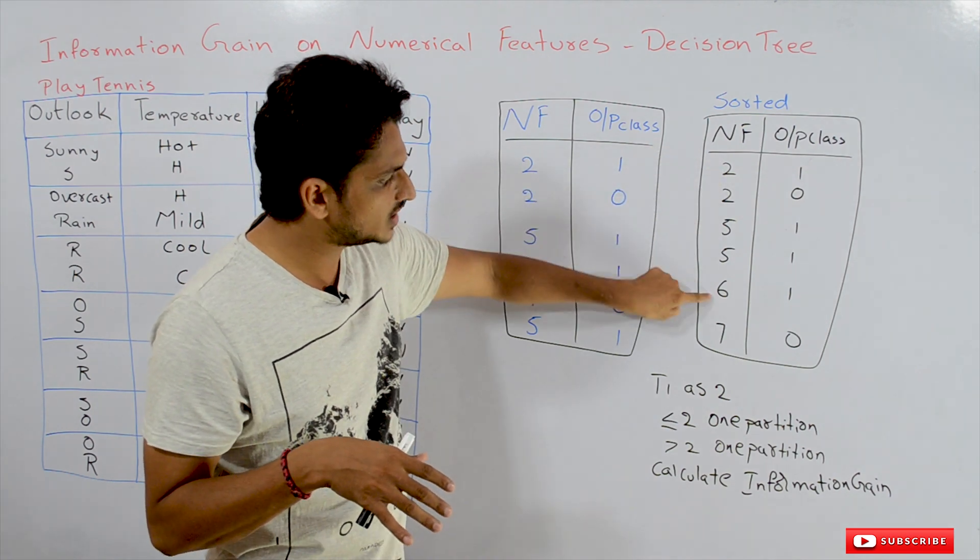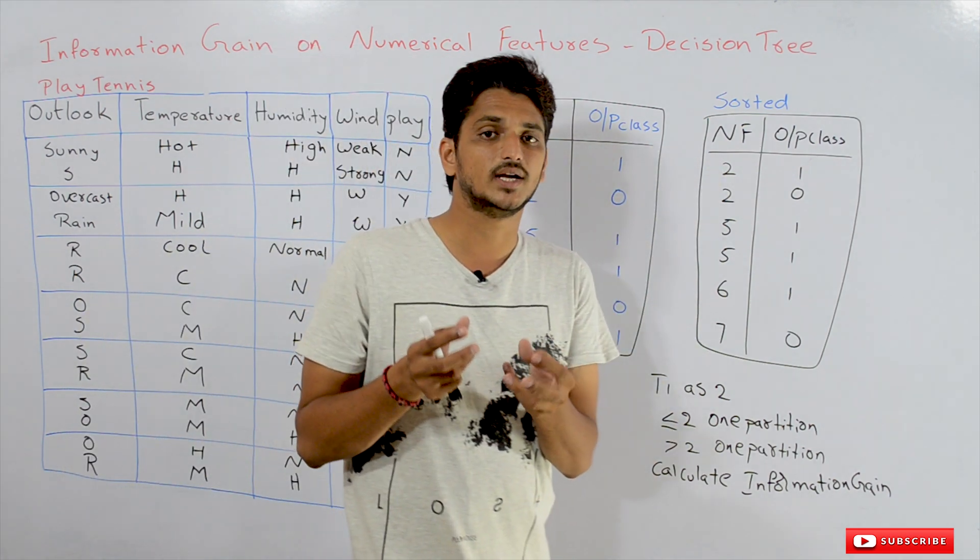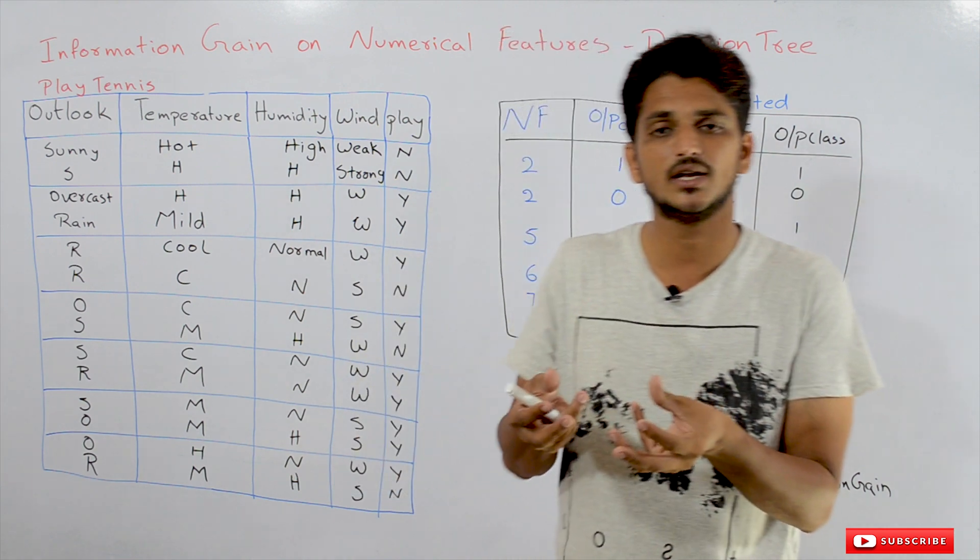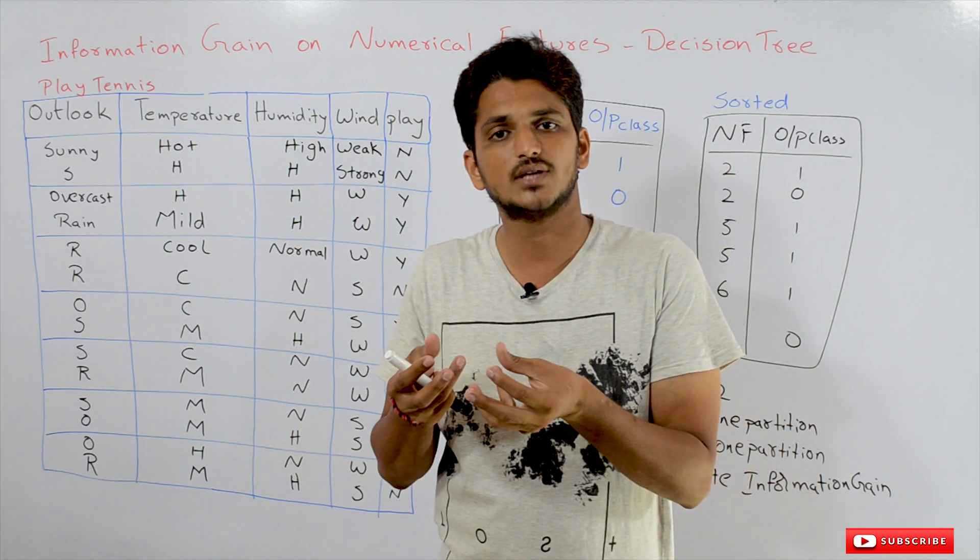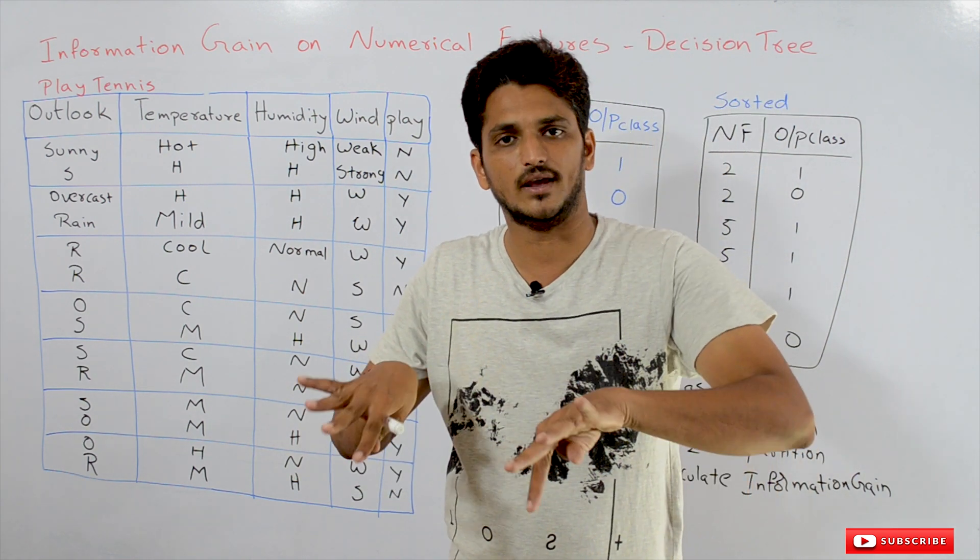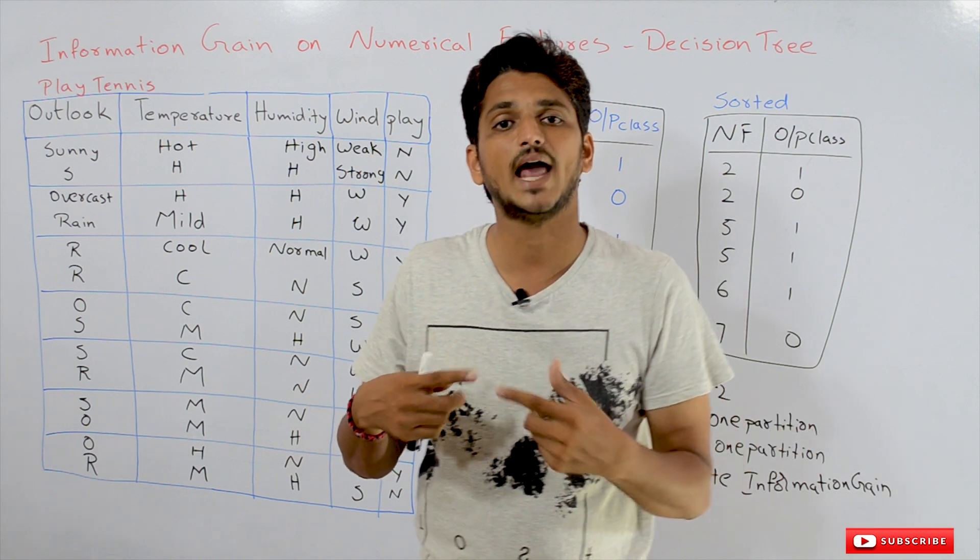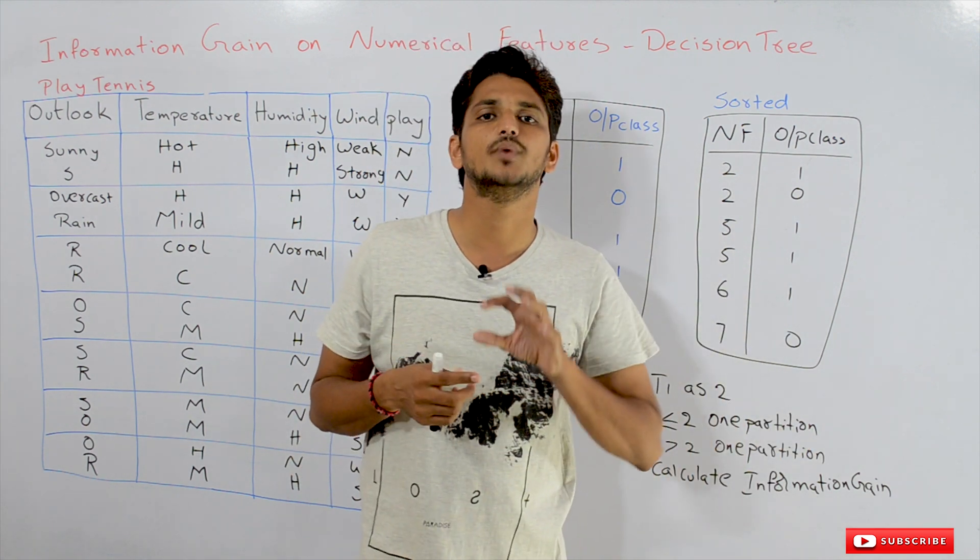2, 5, 6, 7. The numerical value that gives the highest information gain, that value is considered for splitting. This is how we calculate information gain on numerical features.